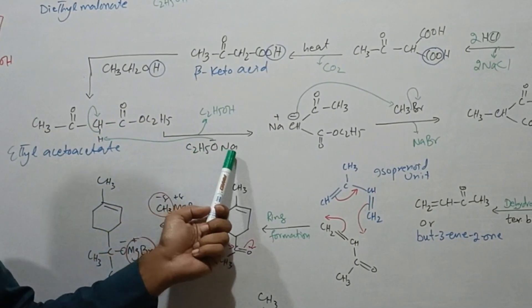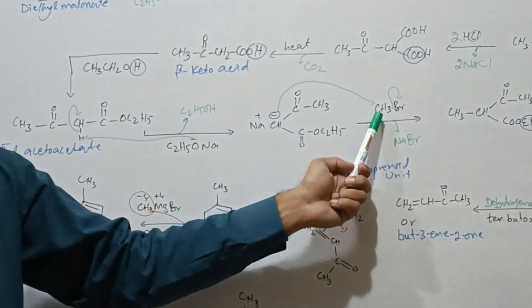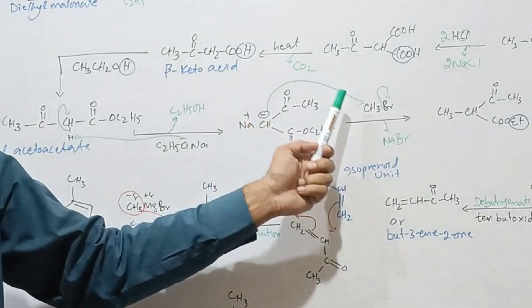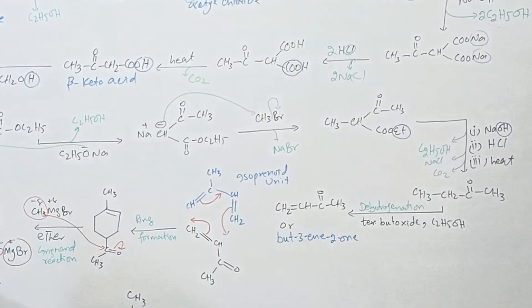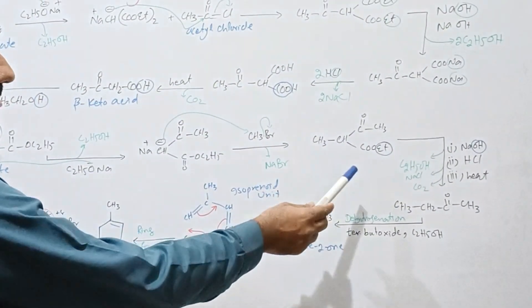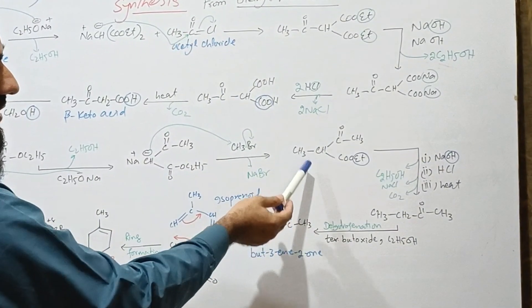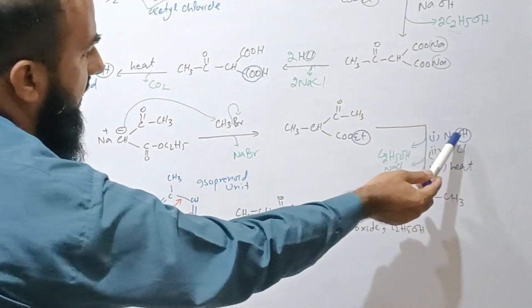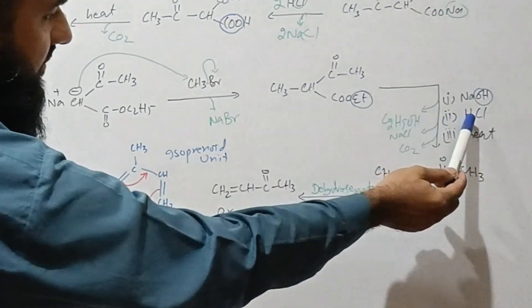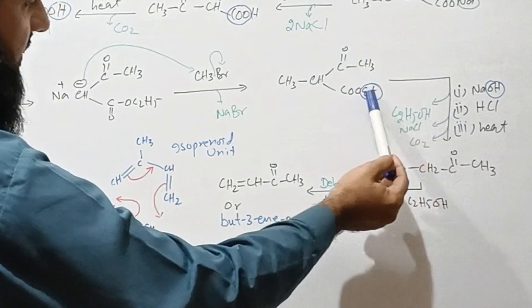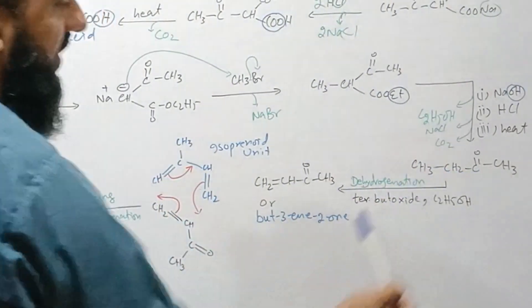This is again treated with base and the acidic hydrogen is removed. A carbanion is formed which attacks methyl bromide such that the negatively charged carbon attacks the methyl group and bromide is removed. The same steps are followed: NaOH is added to remove ethyl alcohol, HCl is added to remove sodium chloride, and heating removes carbon dioxide to obtain butanone.